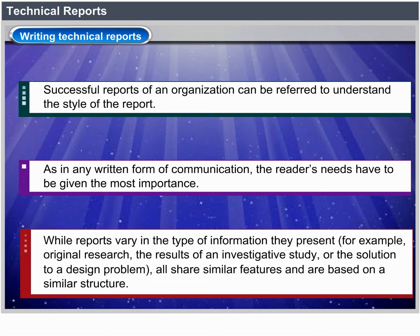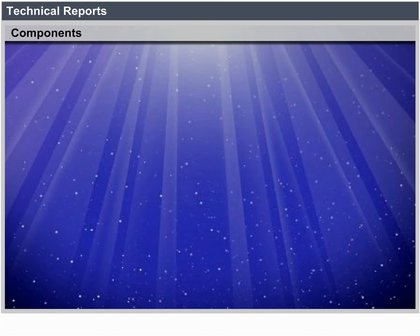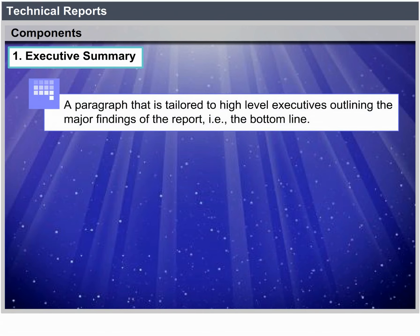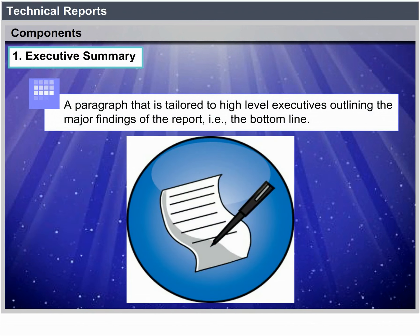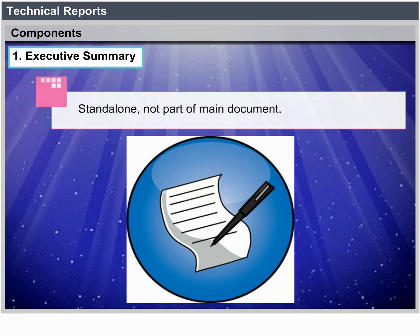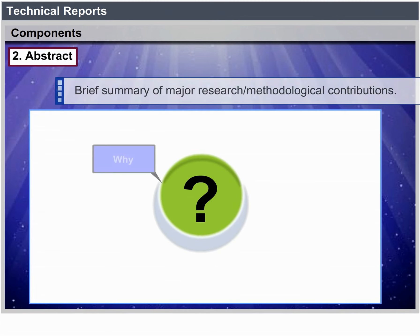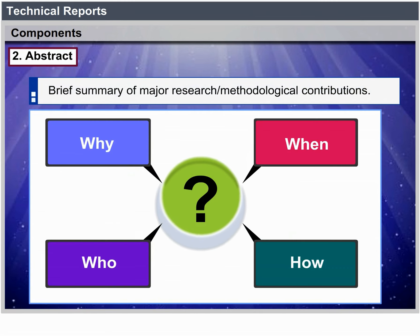Components of a technical report. Executive Summary: A paragraph tailored to high-level executives outlining the major findings of the report — the bottom line. It is standalone and not part of the main document. Abstract: A brief summary of major research methodological contributions, used in research papers and documents.